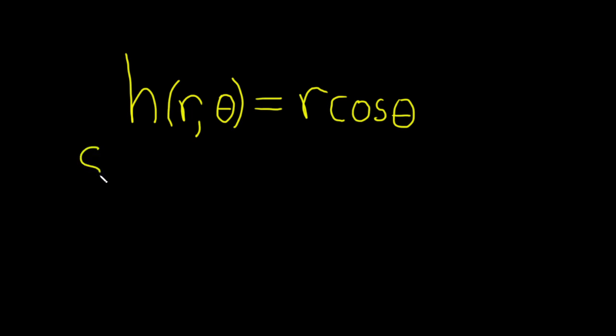Let's go ahead and work through the solution. So we'll start by finding the partial derivative of h, so del h, with respect to r, so del r.